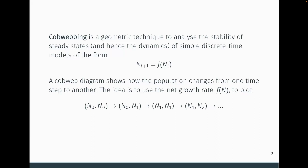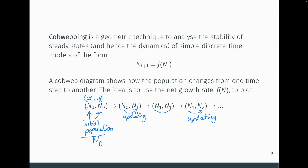This cobweb diagram shows how the population changes from one time step to another, a bit like a time series graph. We set up an xy plane: the horizontal coordinate is our initial population n0, then we show how n0 updates to n1, then n1 updates to n2, and so on — each step representing one time period of updating.